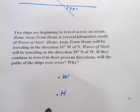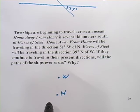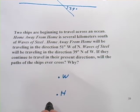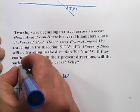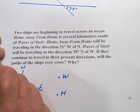Next it says, Home Away From Home, so this guy, will be traveling in the direction 51 degrees west of north. And that's maybe something you haven't heard of before, west of north. So let me just go ahead and draw a compass in again. So there's north, east, south, and west.